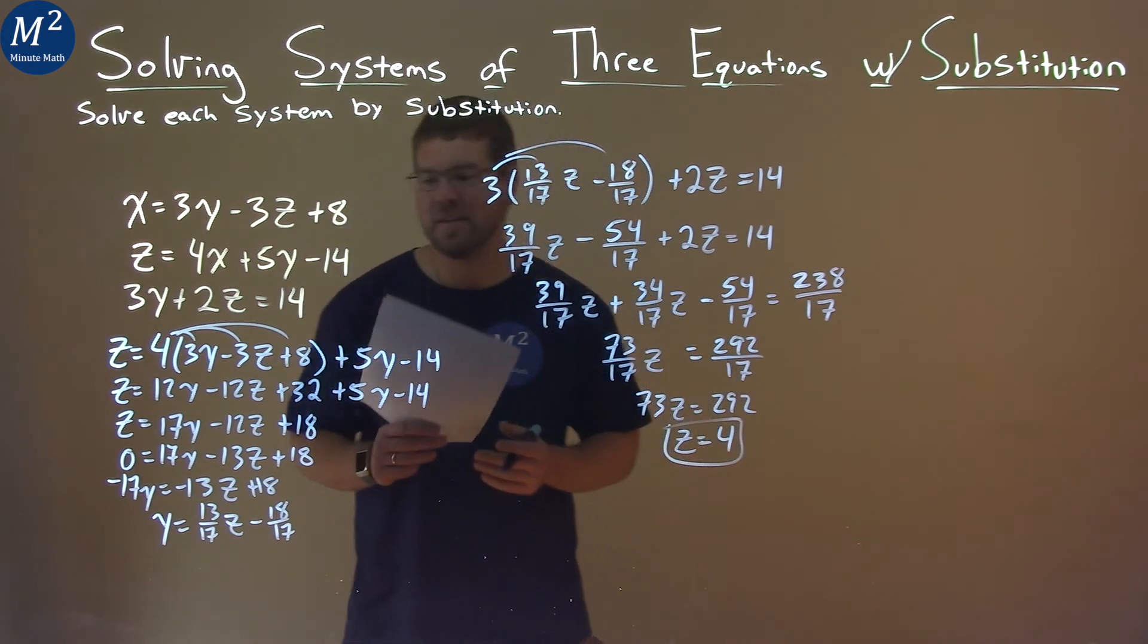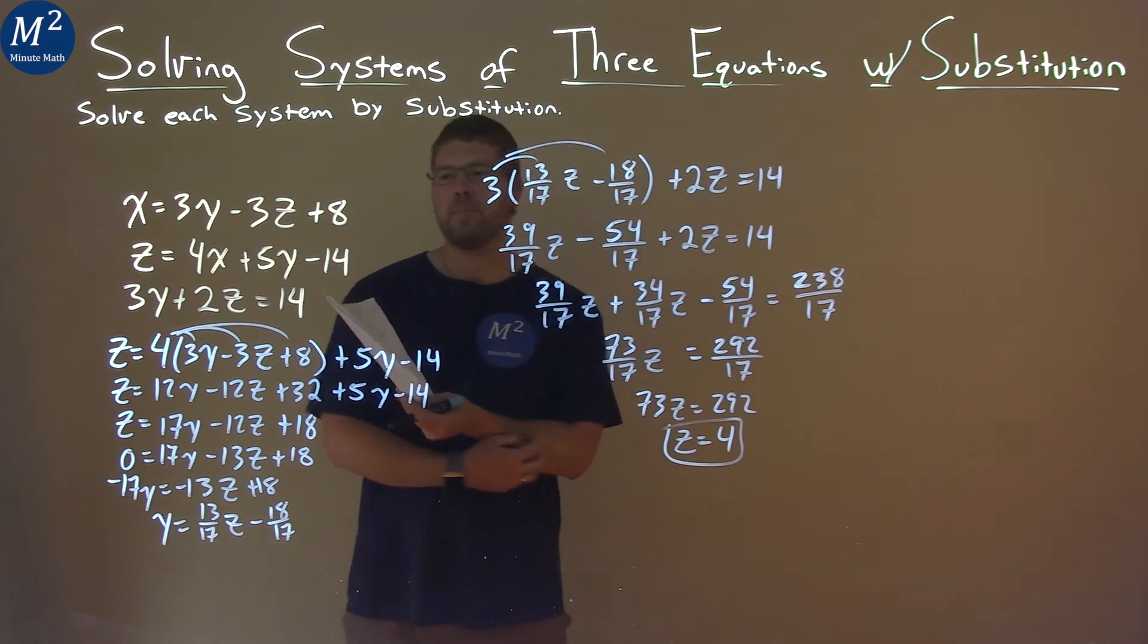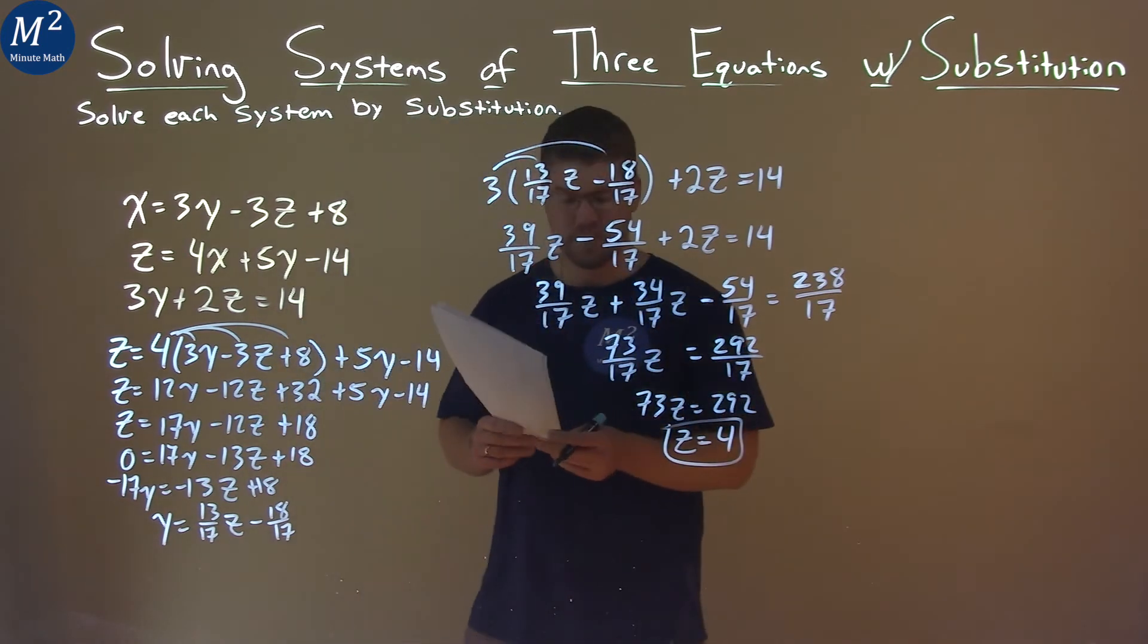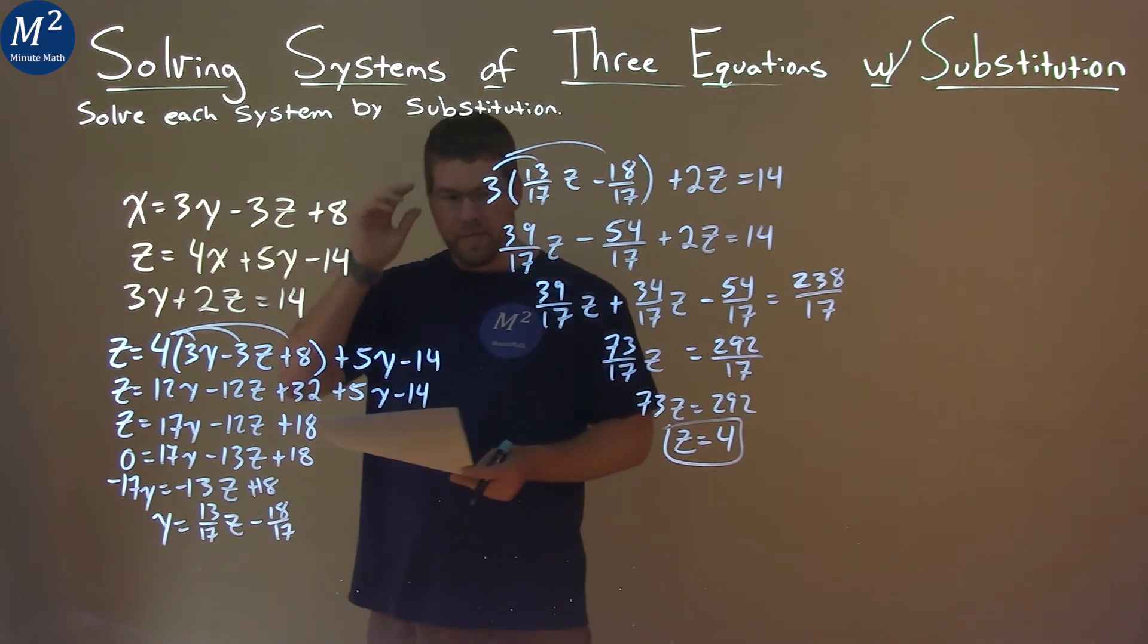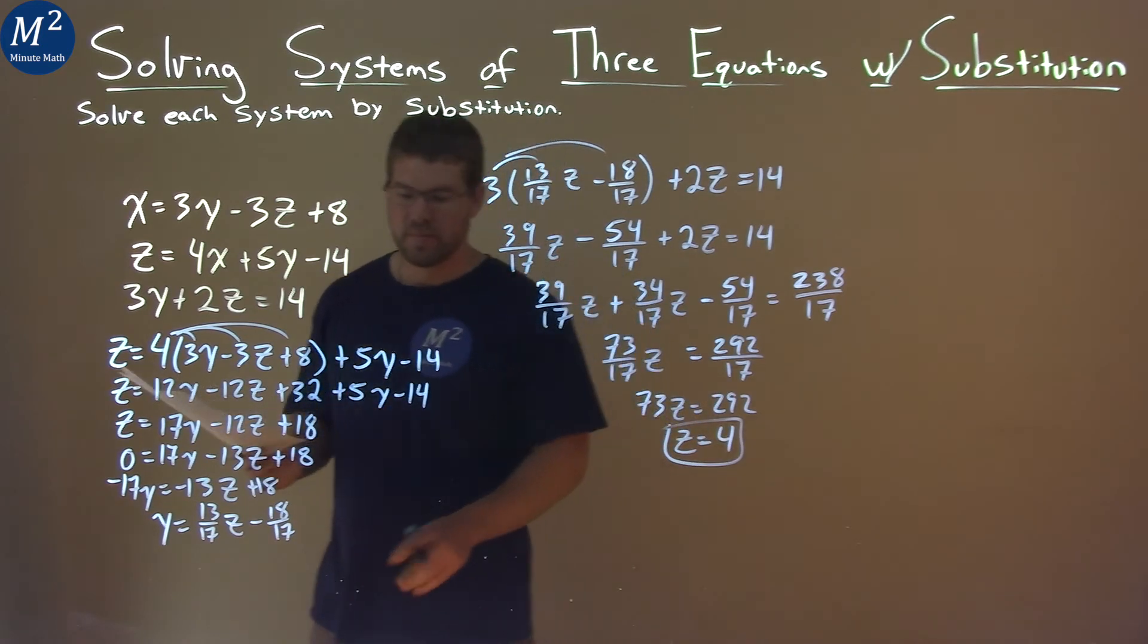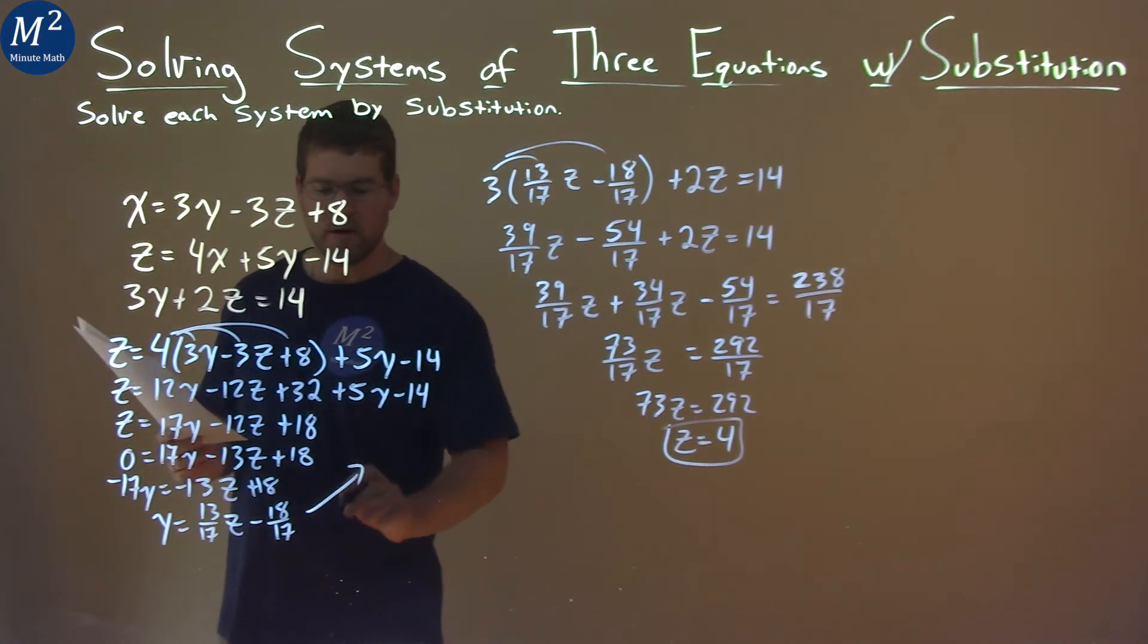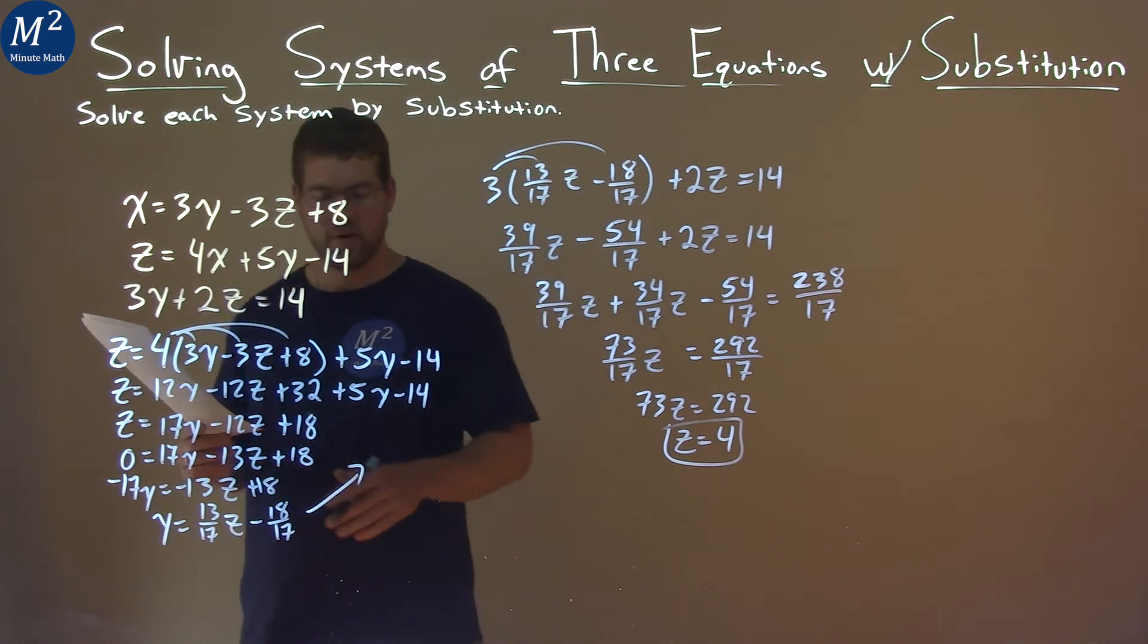After all of that, isn't that nice? Well, sometimes once it becomes a nice neat answer, you kind of know that you did it right. Alright, we have z by itself is 4, but we can use this equation here to get y by itself. We're going to get the answer for y.